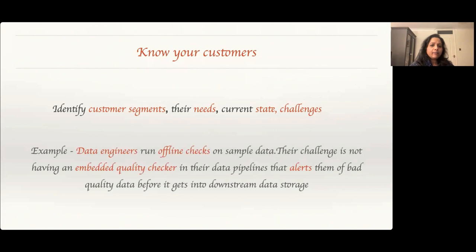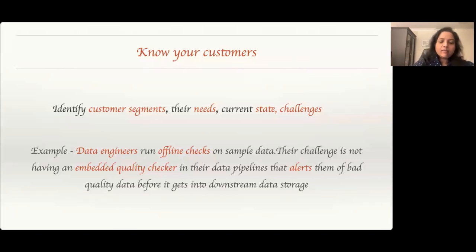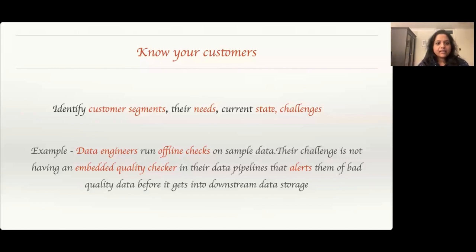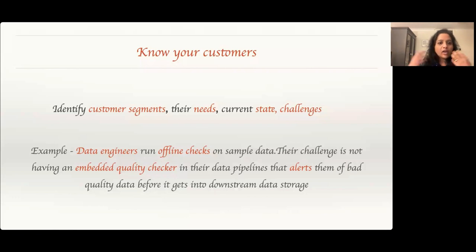For example, data engineers are one customer segment for our data quality tool. They run offline checks — 'offline' is the keyword — they don't capture anything in real time, and they only sample data rather than checking every single data packet passing through their pipeline. Their challenge is that they don't have an embedded quality checker that checks data and alerts them in a timely manner. You capture this as a problem statement for that customer segment.